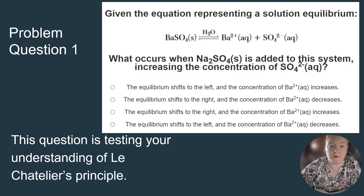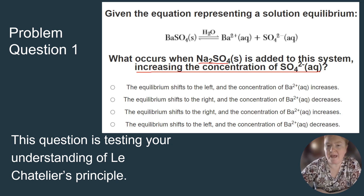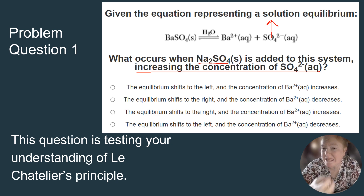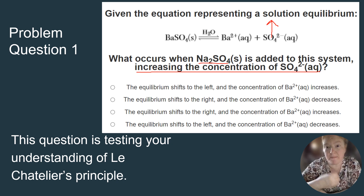Na2SO4 is added to the system, which increases the concentration of SO4²⁻. According to Le Chatelier's principle, when you increase the concentration of something, you stress the equilibrium. The equilibrium will always respond in a way to relieve the stress.